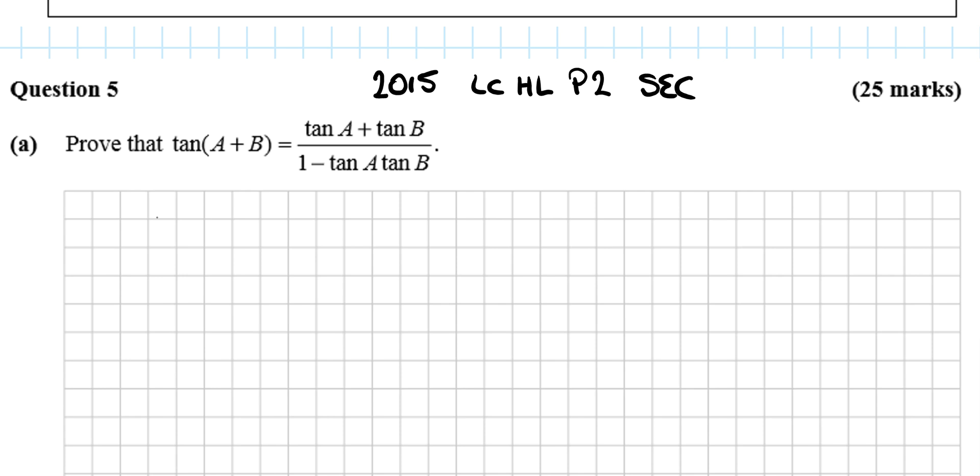So what is tan(A+B)? Well, tan(θ) is defined as sin(θ) over cos(θ), so tan(A+B) is sin(A+B) over cos(A+B).